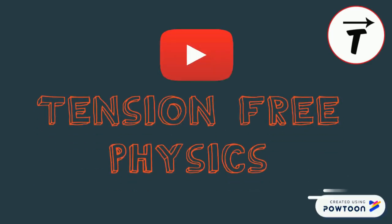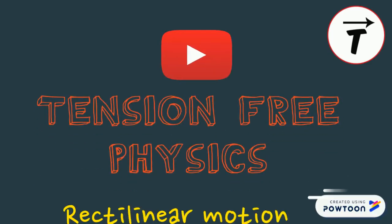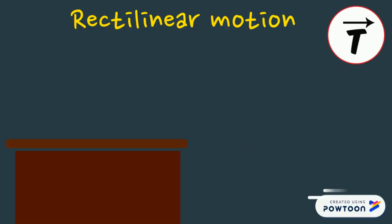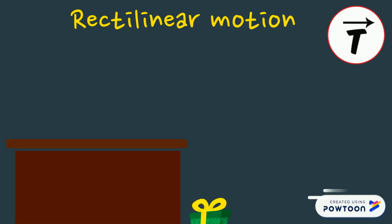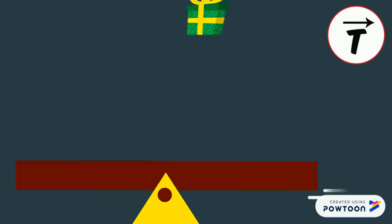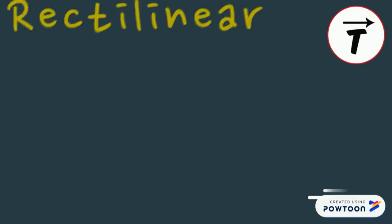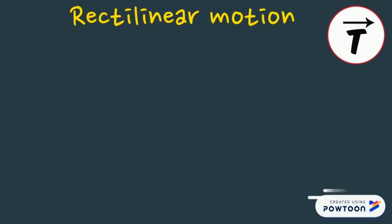Hello and welcome to my channel. In this video, we will speak about rectilinear motion. Rectilinear motion is motion along a straight line. The straight line could be horizontal, vertical, or oblique. We will study three cases of rectilinear motion depending on the variation of speed: uniformly accelerated motion, uniform motion, and uniformly decelerated motion.